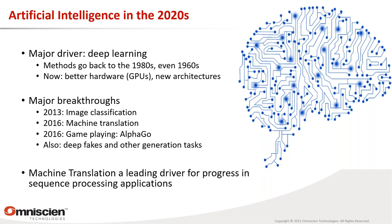These are methods that go back to the 1980s or even 1960s, with two peaks in popularity. What's different now? We have better hardware — GPUs with thousands of threads of parallel processing — which enables newer and more complex architectures. Models today train on several GPUs for several days, something that was not possible 10 or 20 years ago.